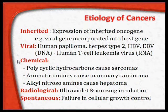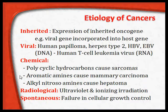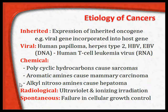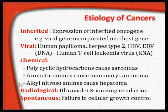Chemicals, particularly organic chemicals such as polycyclic hydrocarbons, cause sarcomas. Aromatic amines cause mammary carcinoma. Alkyl nitrosamines cause hepatoma. Aniline dyes cause bladder cancer. There could also be thermal injury, injury due to tobacco, and many other unknown unexplained factors which work on a particular cell to cause it to mutate and become a tumour cell.